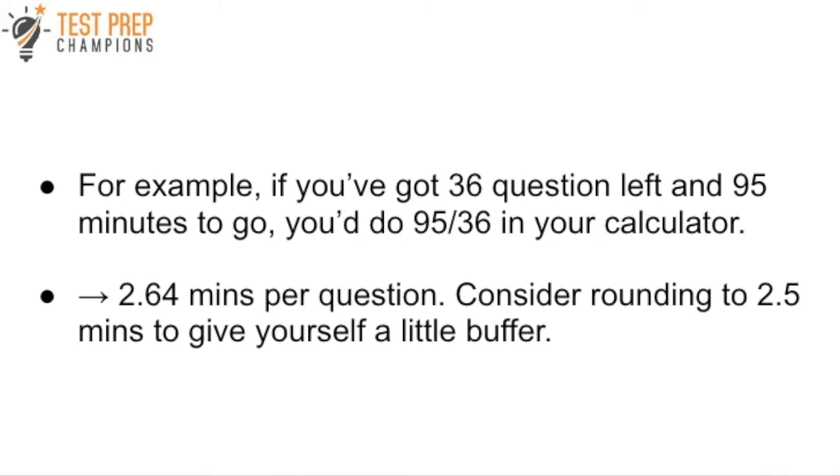Now, I would probably round that down to 2.5. So I would tell myself, okay, I've got about 2.64 minutes per question. Why don't I budget my time to come out to about 2.5 minutes per question? That might give you just a little tiny buffer, but everything you can do to help yourself is going to matter. What you don't want to do is round that up because if you round that up to three minutes per question, you're probably going to end up running out of time, right?